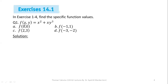In question number 1, the function is f(x, y) = x² + xy³, and we have to calculate f(0, 0), f(2, 3), f(−1, 1), and f(−3, −2). If we have to calculate the value of a function at some specific ordered pair, we replace the first variable x with the first value and y with the second value, and make the same replacement on the right-hand side.